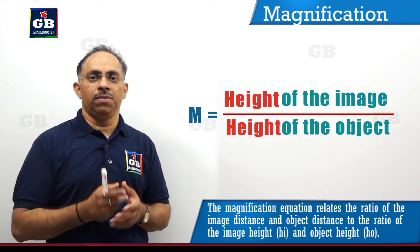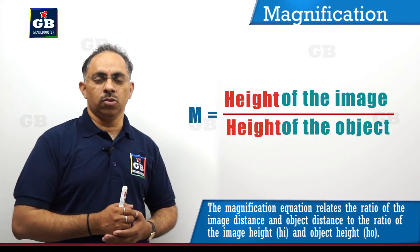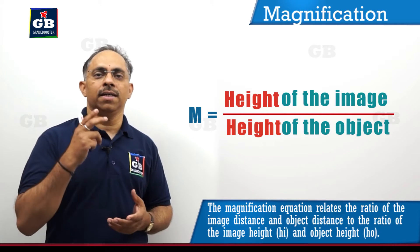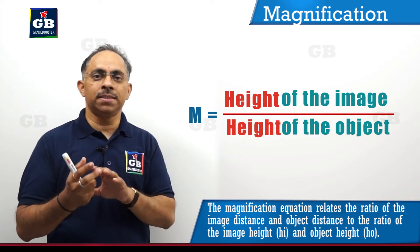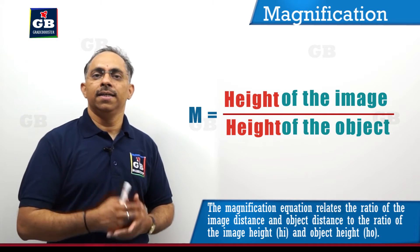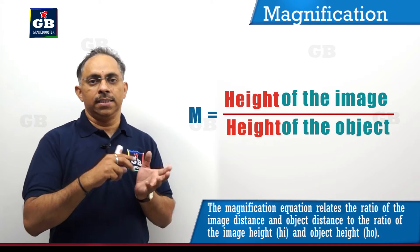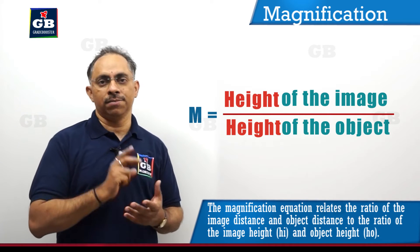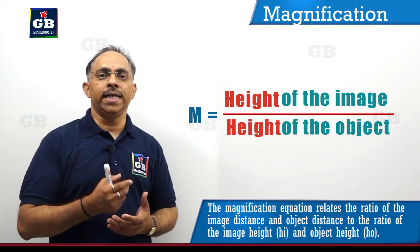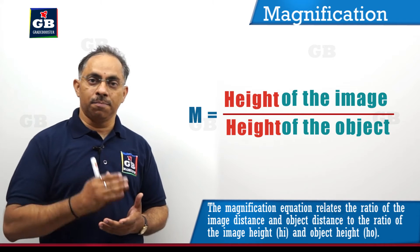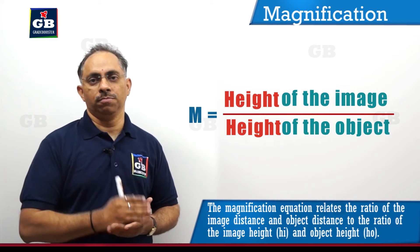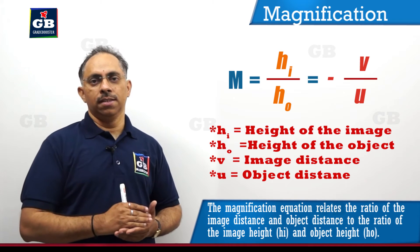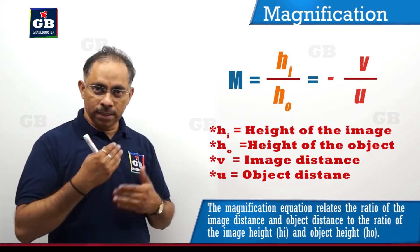When we say size, we will have different dimensions. To avoid confusion, we will represent the size of the image by the height of the image, and similarly the size of the object by the height of the object. So magnification, with symbol M, is equal to the ratio of the height of the image to the height of the object — HI divided by HO.